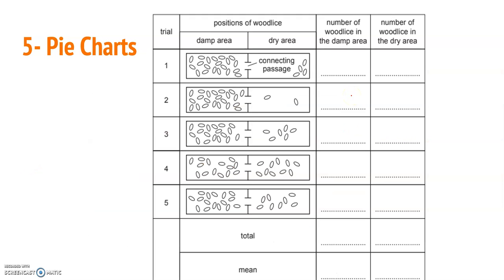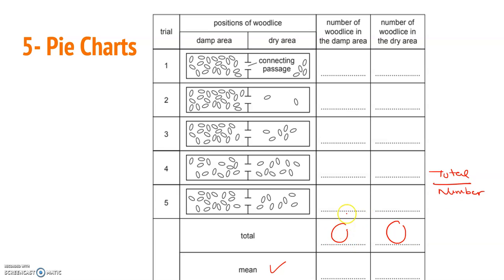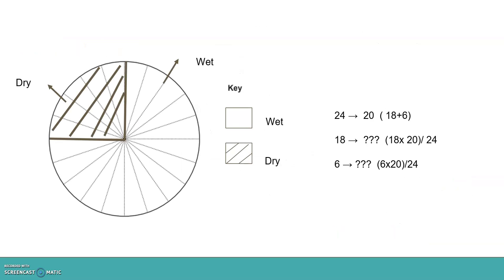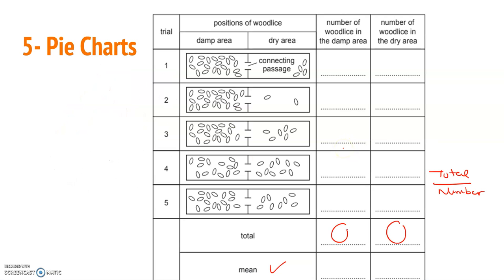The last type is the pie chart. Here we were given insects — we count those in damp conditions and those in dry conditions. After counting, calculate the total, then calculate the average: average = total divided by the number of groups. So if the total is 24 and there are 5 groups, divide 24 by 5 to get the average.